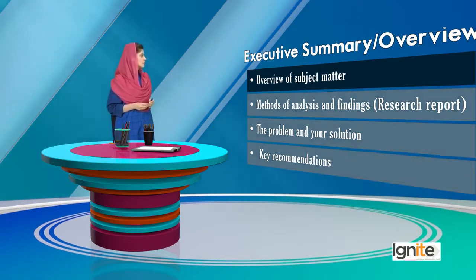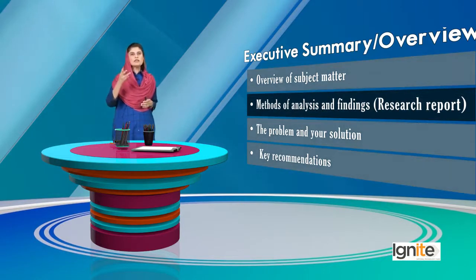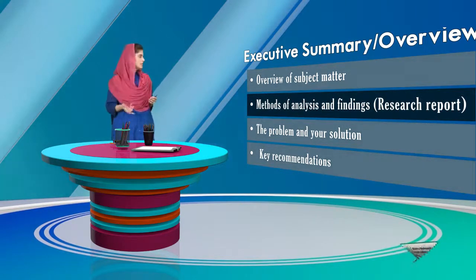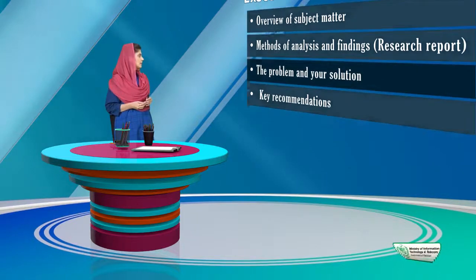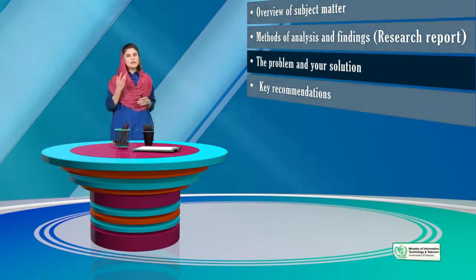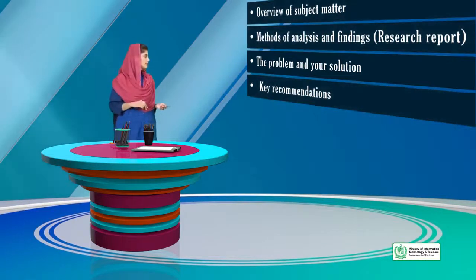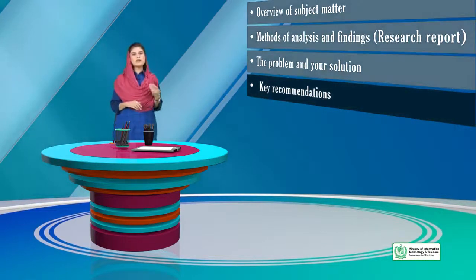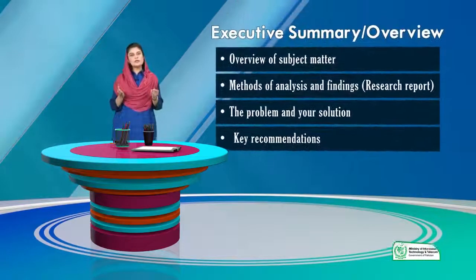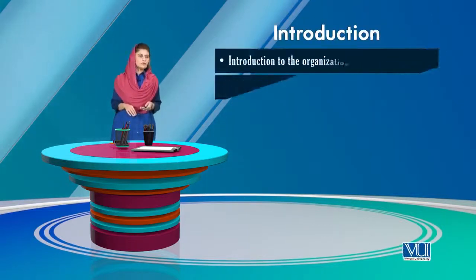There should be an overview of the subject matter. If there is any analysis, findings, or research, you should mention how it was done, what the problem was that was attempted to be solved, what the report is about, and what recommendations have been made for the future. All these things should be briefly mentioned in the executive summary.